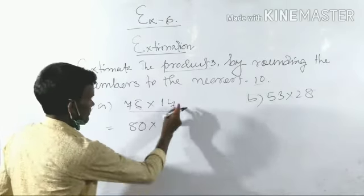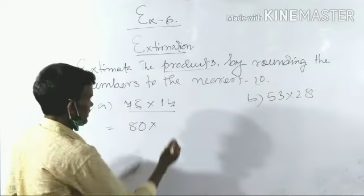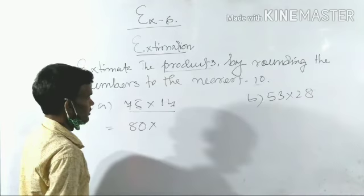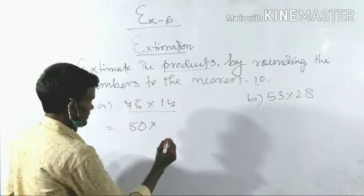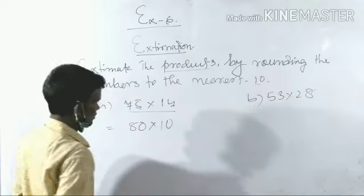Then 14: one ten, the next number is 4. Four is less than 5, so the number is standing in ten. It is 10, not 20.